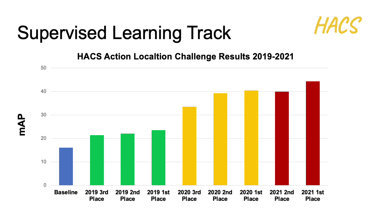Let's move on to model performance over the years. Since we have hosted the HACS Action Localization Challenge in 2019 and 2020, we put the best performing models here. The baseline is SSN, which was proposed in 2017. The 2019 models are the green bars, the 2020 models are the yellow bars, and this year's challenge best performing models are the red bars. We can see consistent improvement of performance over the years.